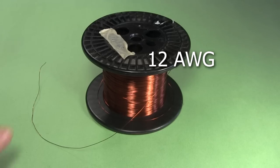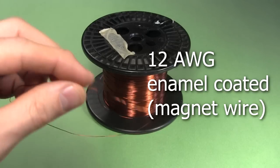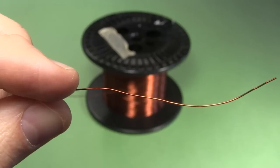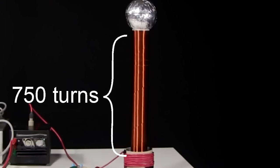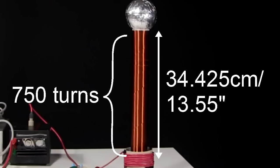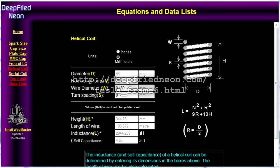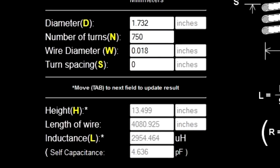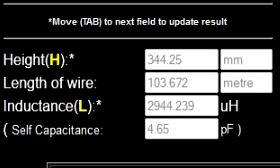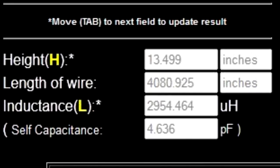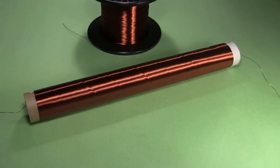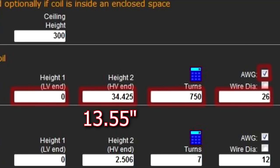I'm using 26 gauge enamel coated wire. This is available in electronics stores and can be salvaged from old motors and electronics. I'm putting on 750 turns, which works out to a 34.425 centimeter long coil. I used another online calculator to get the total wire length needed, which is 103 meters, but make sure to have a little extra for the two ends for connecting to things. That's all in the calculator here.